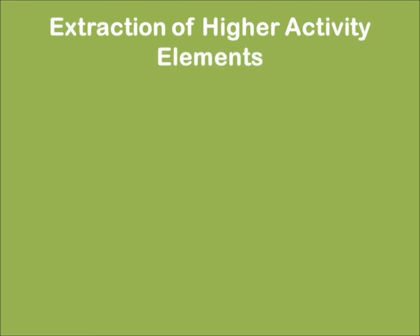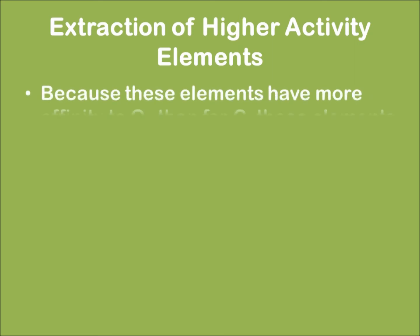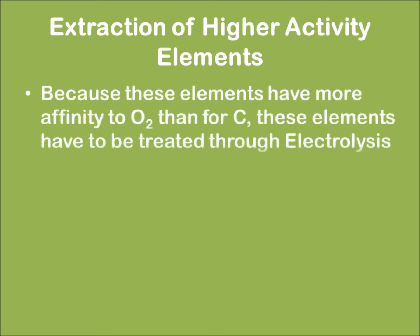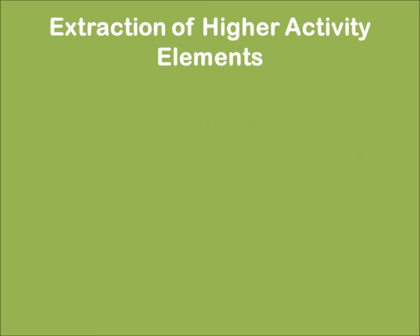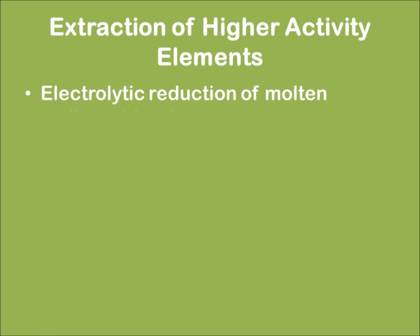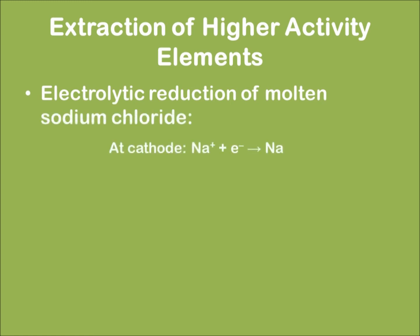For metals in the higher activity region, because these elements have a greater affinity for oxygen than for carbon, electrolysis is the best method. For example, electrolytic reduction of molten sodium chloride: at the cathode the metal is deposited, and at the anode chlorine gas is evolved. Electrolytic refining of a metal follows similar reactions at anode and cathode.